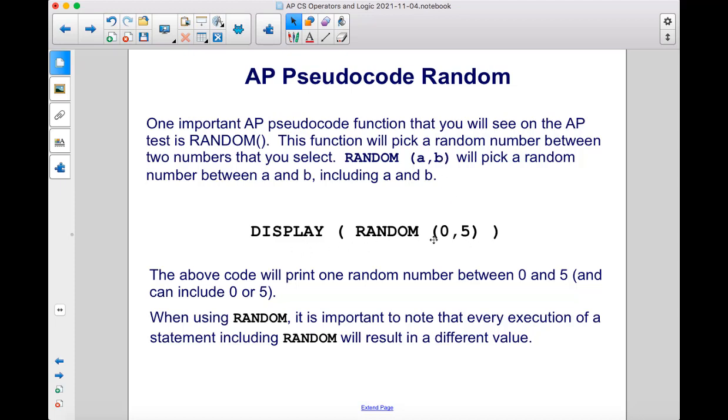So this code here, DISPLAY RANDOM(0,5), will print one random number between zero and five, and that number can include zero or five. When using RANDOM, it is important to note that every execution of a statement including RANDOM will result in a different value.